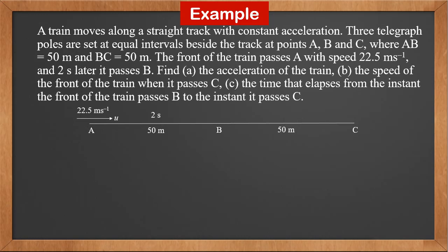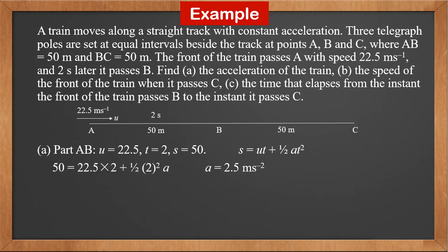Let's sketch it out. AB is 50 meters and BC is 50 meters. The initial velocity at A is 22.5 meters per second, and it takes 2 seconds to go from A to B. For part AB, we know 3 values: initial velocity u is 22.5, time t is 2, displacement s is 50. Using the formula s equals ut plus half at squared and putting in the values, we get acceleration a as 2.5 meters per second squared.